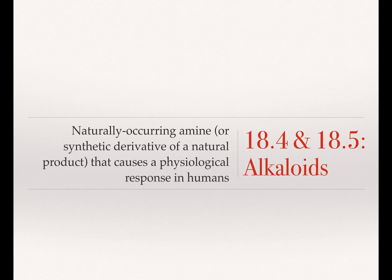Let's talk about alkaloids — this is sections 18.4 and 18.5. Alkaloids are defined as a naturally occurring amine, meaning it comes from a plant or an animal. Alkaloids can also include synthetic, human-made versions of naturally occurring amines. An alkaloid is a naturally occurring amine that causes a physiological response — it does something when we take it, eat it, smoke it, inject it, and causes some noticeable change to one of the systems in our body, like making you sleepy, alert, or reducing fever, pain, or inflammation.